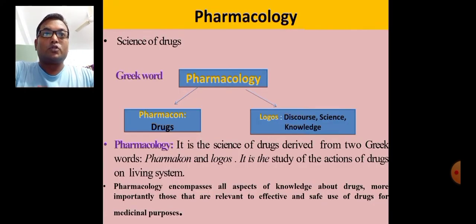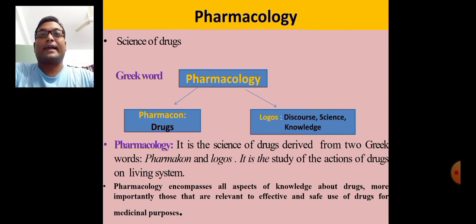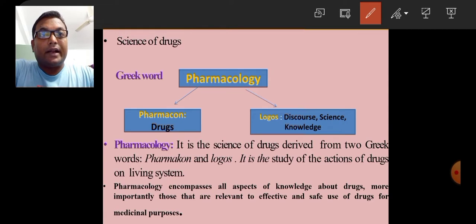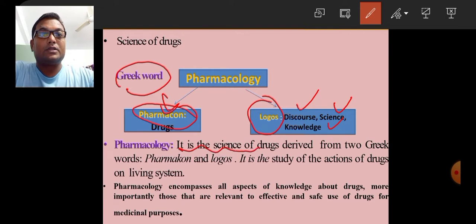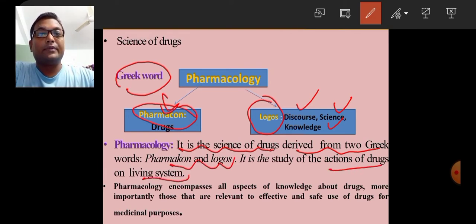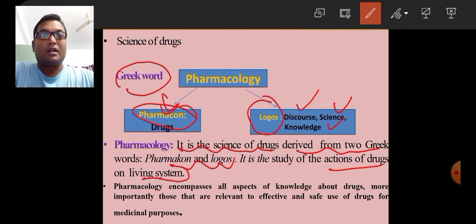Pharmacology is basically a science of drugs. All knowledge regarding drugs — action of the drug, mechanism of action, side effects, or adverse reactions — all aspects of drugs are studied in pharmacology. Pharmacology is derived from the Greek words 'pharmacone,' meaning drugs, and 'logos,' meaning discourse, science, or knowledge. It is the study of action of drugs on the living system and encompasses all aspects of knowledge about drugs relevant to effective and safe use for medical purposes.